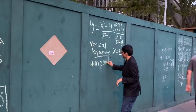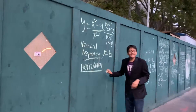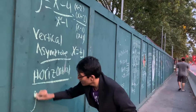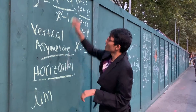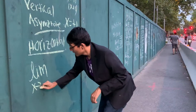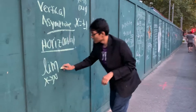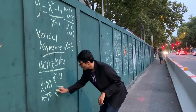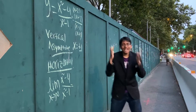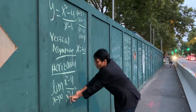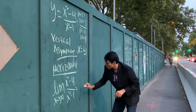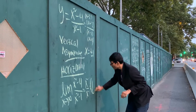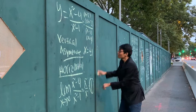The horizontal asymptote of a function is found by taking its limit as x approaches infinity. We take the limit as x approaches infinity of x squared minus 4 over x squared minus 1. When taking this kind of limit, you only pay attention to the highest degree terms — in this case x squared over x squared — which equals 1. That gives us a single horizontal asymptote at y equals 1.